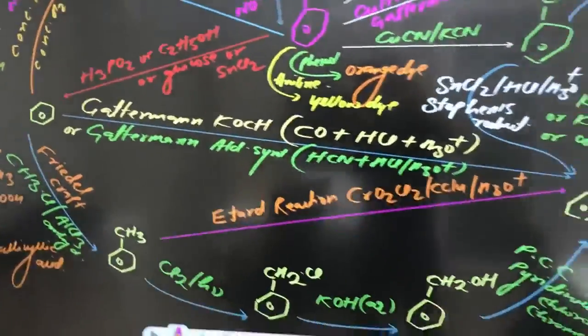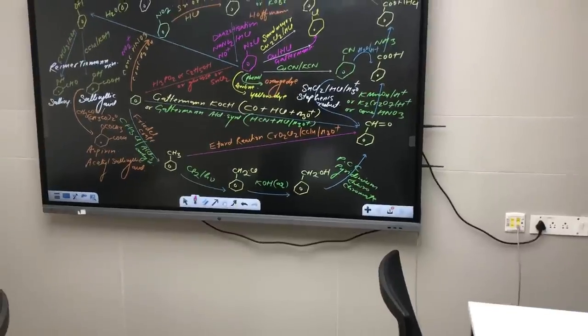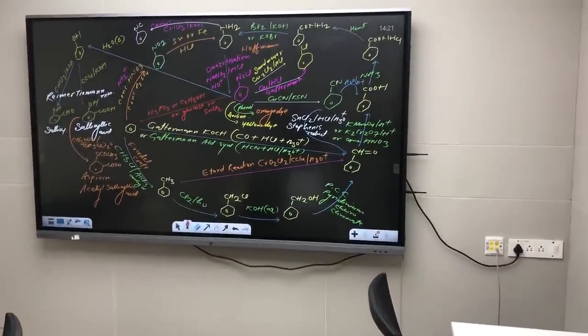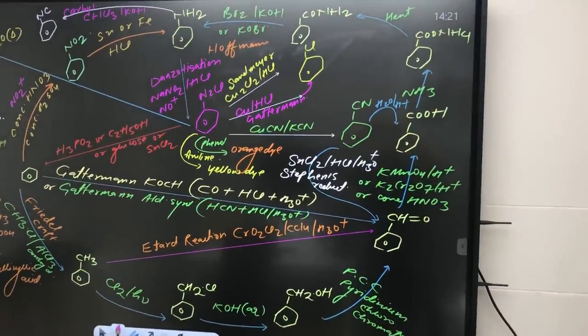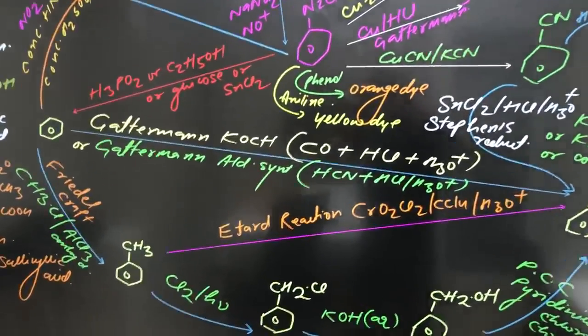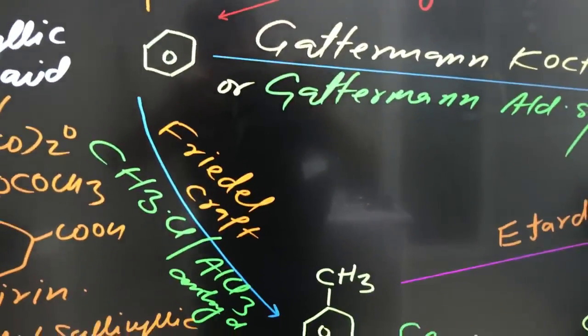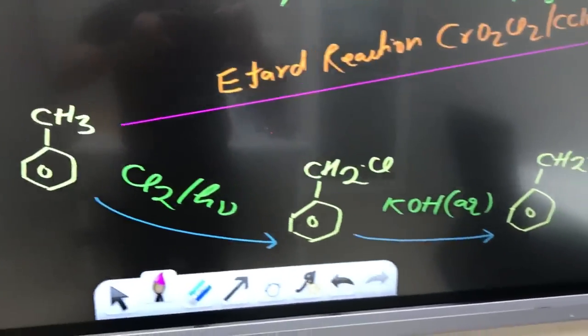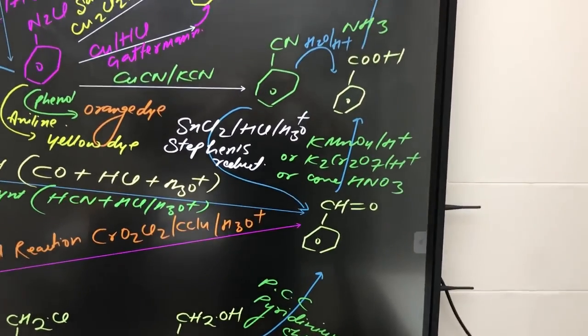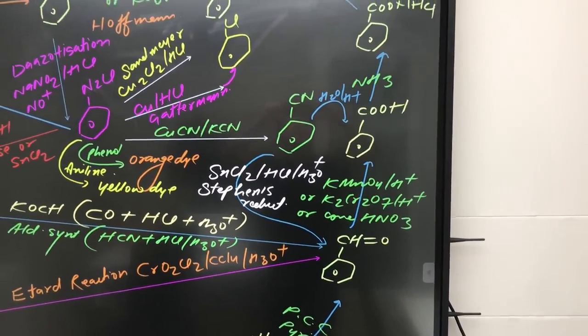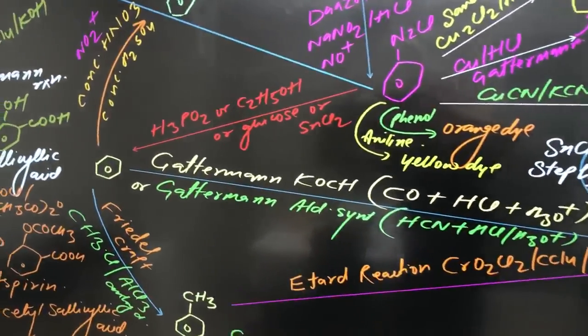Now from where we have started, kids? We have started from benzene. Once again let me show you, this was the memory chart. Now let's go closer to benzene, because this circle is still not completed. This was the benzene and we have gone like this: benzene, toluene, benzyl chloride, benzyl alcohol, benzaldehyde, benzoic acid, and then ammonium benzoate. Now see to it, this was your benzene.